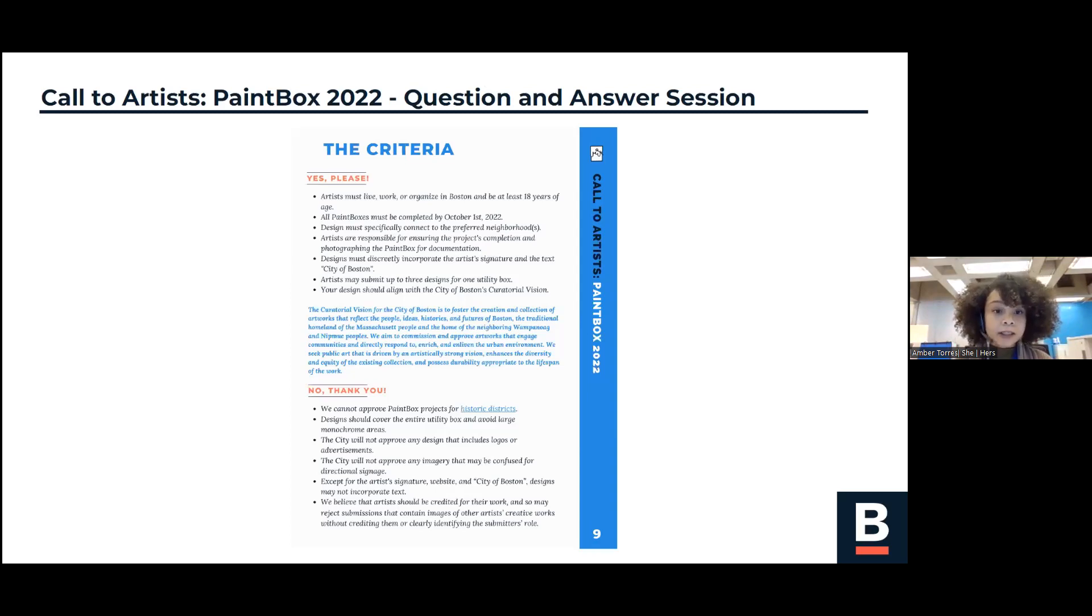On page 9, there's criteria that the working group will use to review and select finalists. Artists must live, work, or organize in Boston and be at least 18 years of age. All Paintboxes must be completed by October 1st, so let's try to get them done during the summer, ideally. Designs must specifically connect to the preferred neighborhood in some way. Artists are responsible for ensuring the project's completion and photographing the Paintbox documentation. Designs must discreetly incorporate the artist's signature and the text City of Boston. Artists may submit up to three designs for one utility box, but you will only be able to complete one utility box this year. And your design should align with the City of Boston's curatorial vision, which you can read more about on page 9 as well.